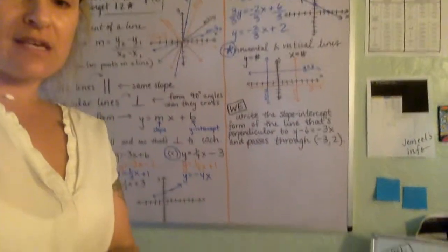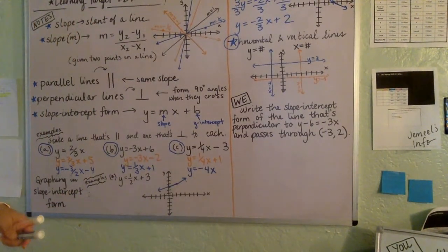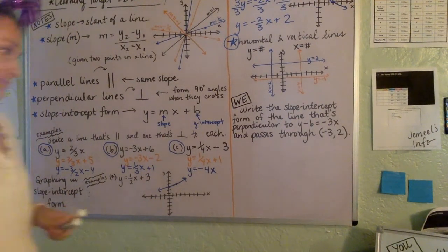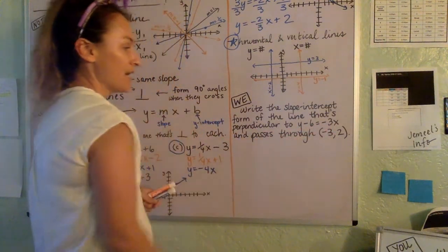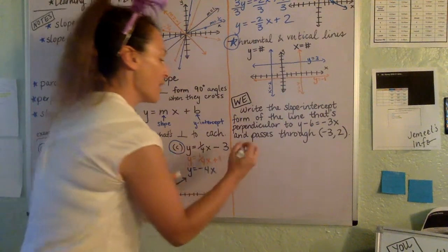So let's take a look at this problem here. We want to write the slope intercept form of the line that is perpendicular to Y minus 6 equals negative 3X. And it passes through negative 3 comma 2.